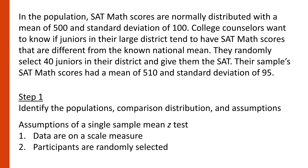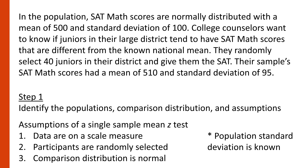Second, participants are randomly selected. In this scenario, we are told that they randomly selected 40 juniors, so this assumption has been met. Third, the comparison distribution is normal. In this case, because the population is normal, we know that the sampling distribution will also be normal. I'm going to add a fourth assumption specifically for using the z-distribution: the population standard deviation is known.